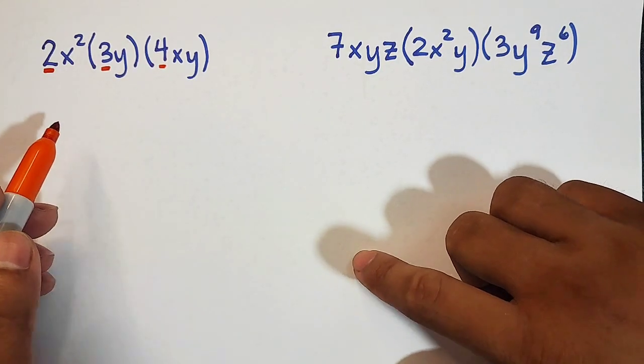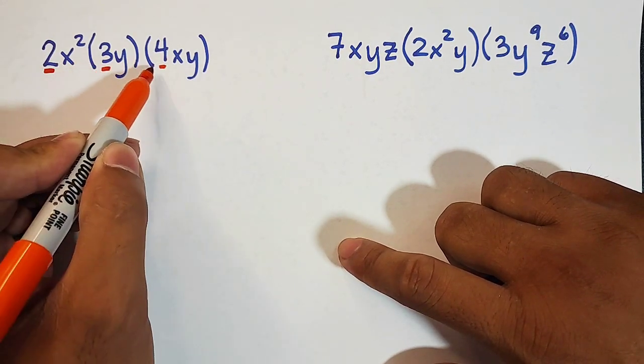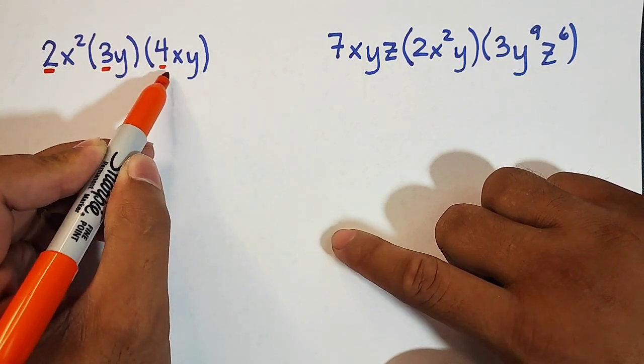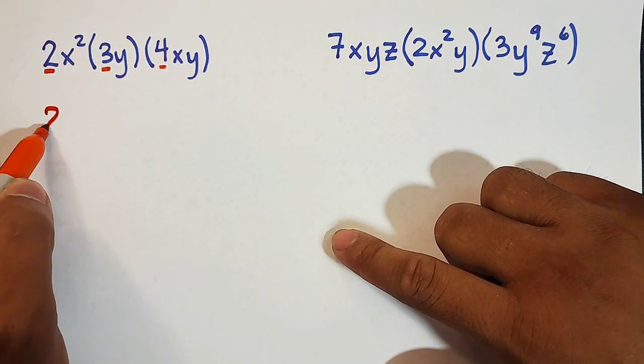So let's start with this one. 2 times 3 times 4. 2 times 3 is 6. Times 4, we have 24.